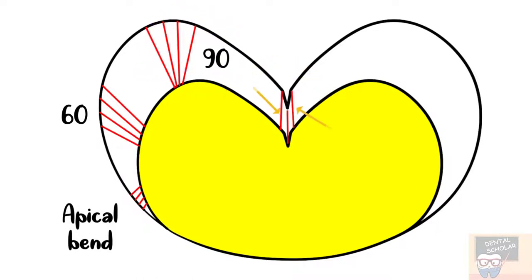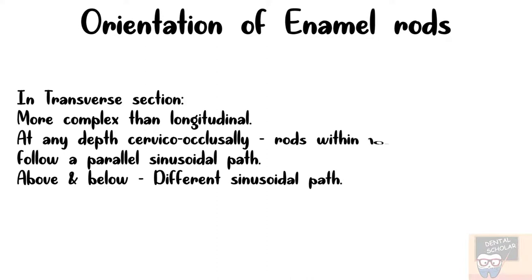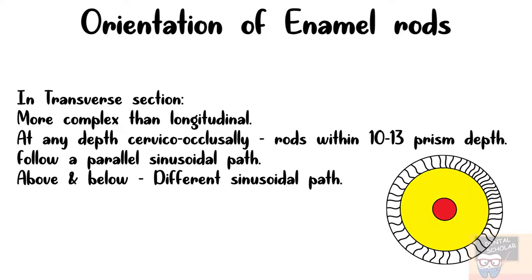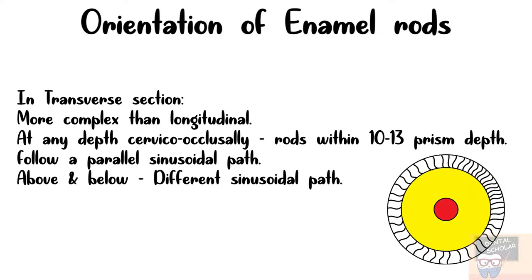Around the periphery of occlusal fissures, the angle of rods is about 20 degrees — least around the periphery of occlusal fissures. At the base of fissures, the rods make an angle of about 90 degrees. The arrangement of rods in transverse section, that is in the horizontal plane, is more complex than in the longitudinal section.